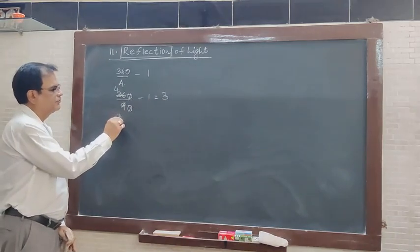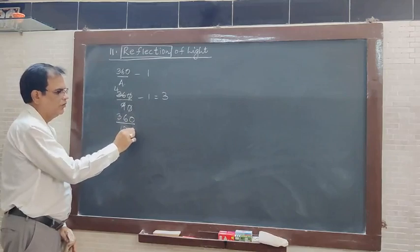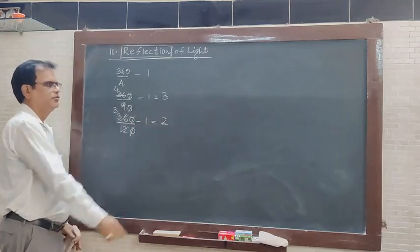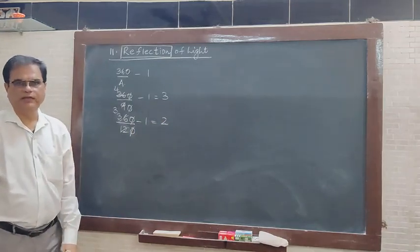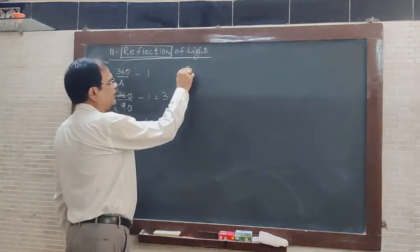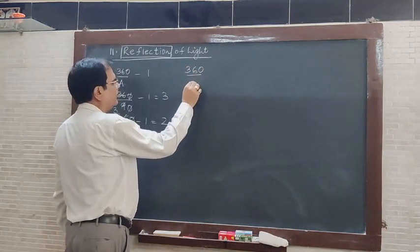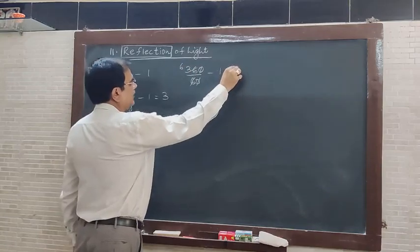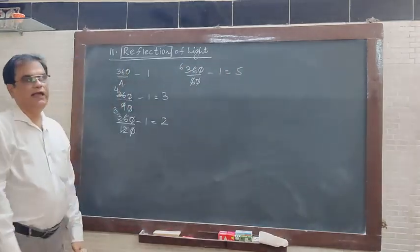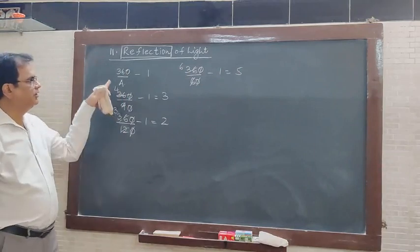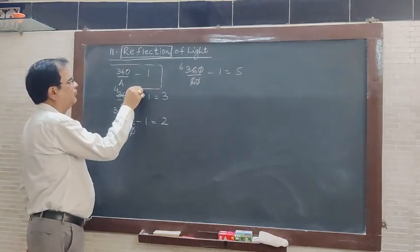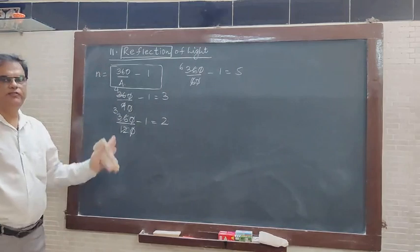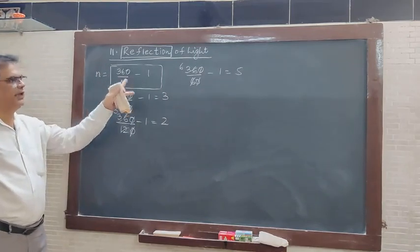So you can see 3 images. Suppose if the angle is 120 degrees: 360 divided by 120 = 3, minus 1 = 2 images. Now suppose if it is 60 degrees: 360 divided by 60 = 6, minus 1 = 5 images. So you have to remember this formula to find out the number of images formed by any two mirrors when they are kept at an angle: 360 upon A, minus 1.